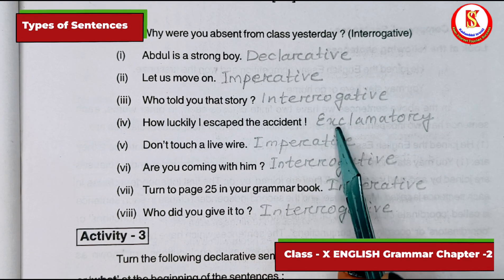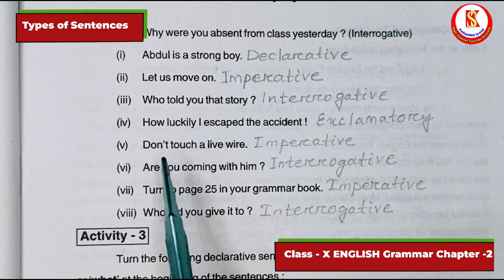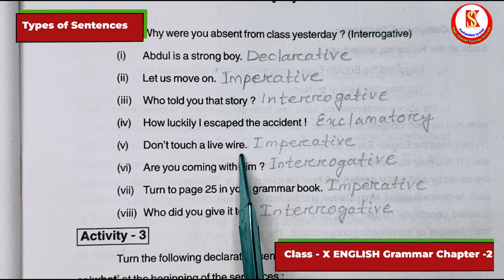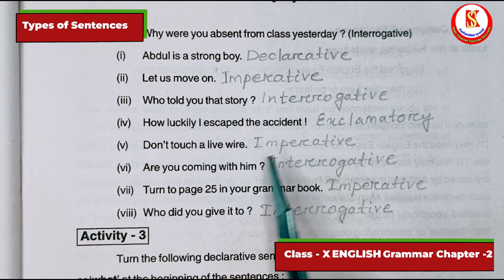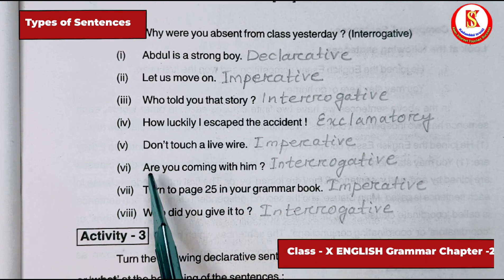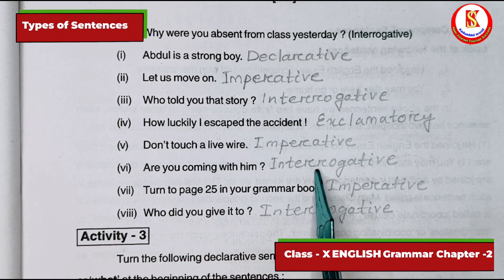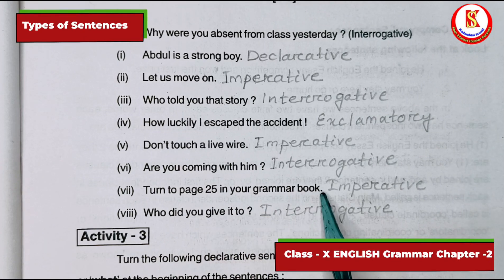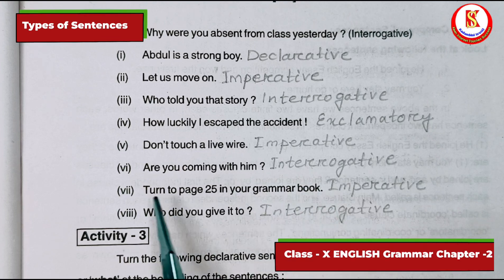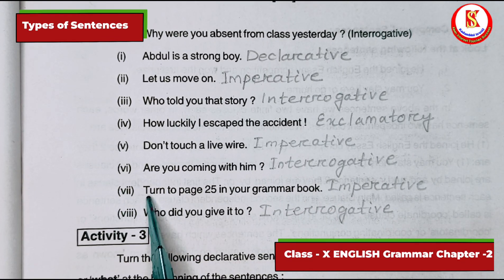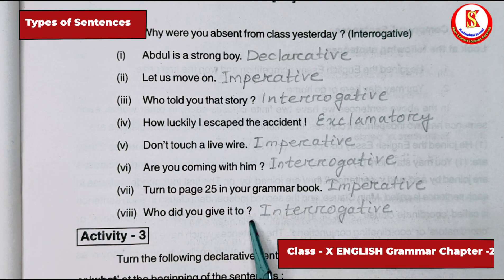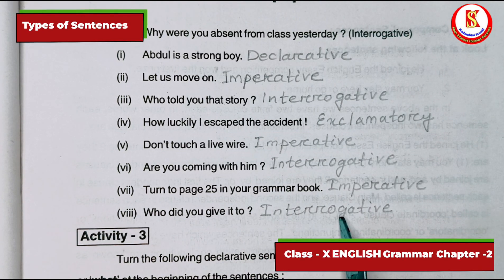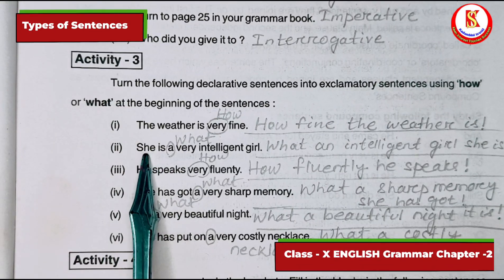'How luckily I escaped the accident!' — it has an exclamation symbol, so the sentence is exclamatory. 'Don't touch a live wire' — it starts with a verb, so it is an imperative sentence. 'Are you coming with me?' — question mark, so interrogative. 'Turn to page 25 in your grammar book' — full stop, starts with the verb 'turn', so it is imperative. 'Who did you give it to?' — question mark, so interrogative.